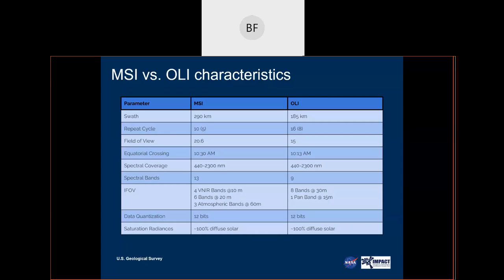The equatorial crossing time is in the morning — we align with MODIS Terra. The spectral coverage between the two instruments is essentially the same. We do carry the two thermal bands from Landsat. For optical imagery, we cover the same spectral range, and we have specific information about band ranges coming up shortly.